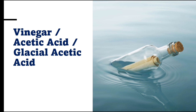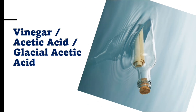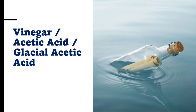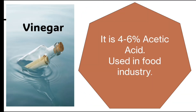Moving on to the first one, let us understand what is vinegar. Vinegar in Hindi is known as sirka. We use sirka at home in many things, like making noodles or sauces, and for preservation. So vinegar is actually four to six percent acetic acid, and it is usually used in the food industry.